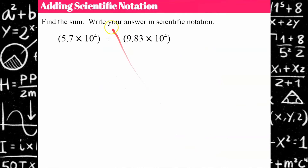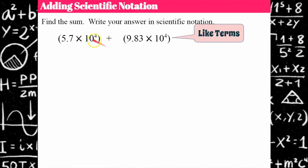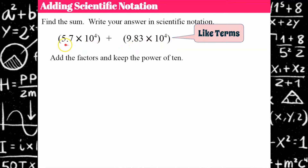If you think you're ready to go, pause and try the next problem. These are like terms because they both have the same power of 10, so I don't need to change any factors. I'm going to add the factors and keep the power of 10. So 5.7 plus 9.83 is 15.53, and then we keep the power of 10. You don't do anything when you add or subtract as long as your power of 10 is the same.